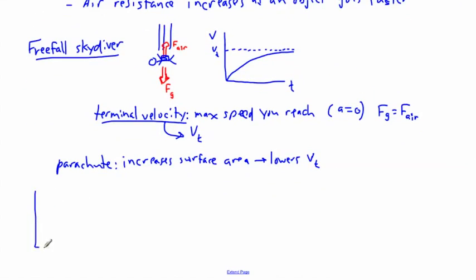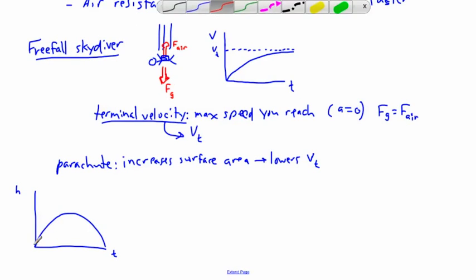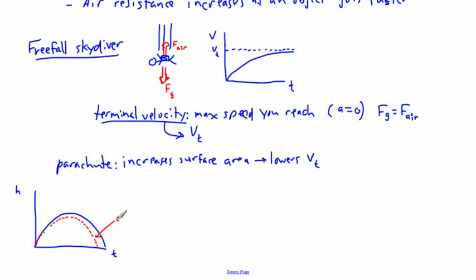We can also look at a graph of something moving in two dimensions. If I launch a rock off a cliff at an angle, without air resistance it follows a nice parabolic arc — that's the blue graph. But with air resistance — the red graph — it goes less high and lands sooner because air resistance slows it down. What should be a perfect arch gets squished and lowered.